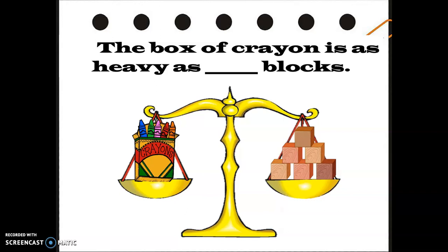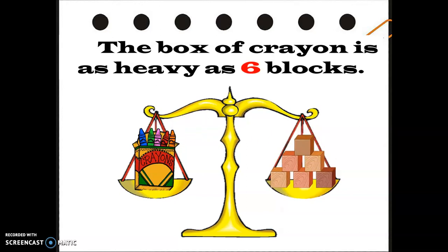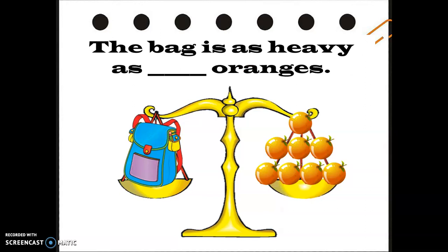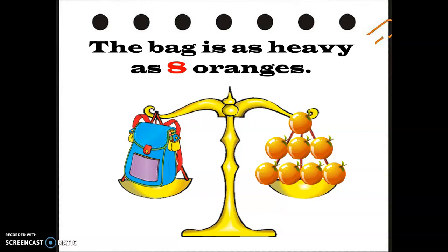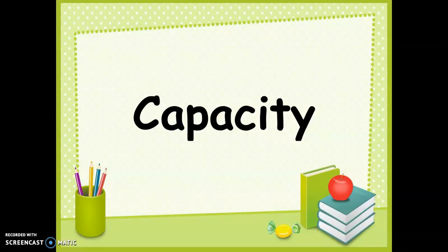Let's have some examples. The box of crayons is as heavy as blank blocks. As you can see, we use blocks to measure the mass of the crayons. The answer is: the box of crayons is as heavy as six blocks. Very good! Next, the bag is as heavy as blank oranges — how many oranges do we need to measure the mass of the bag? The bag is as heavy as eight oranges. Good job!